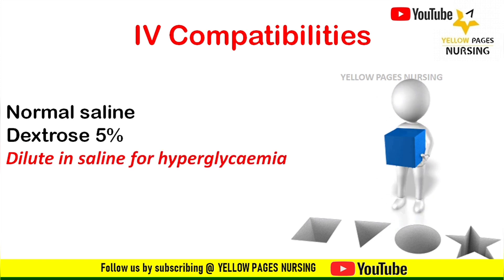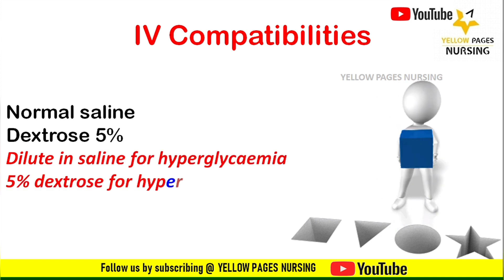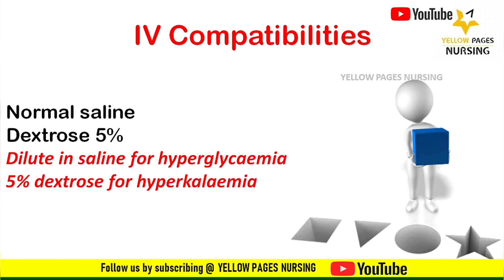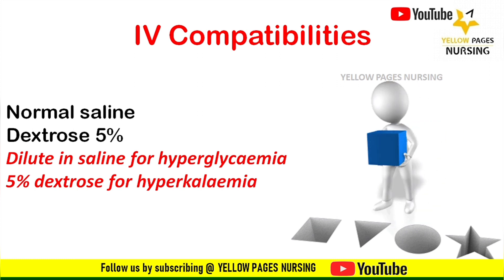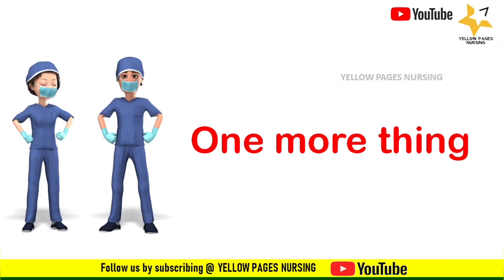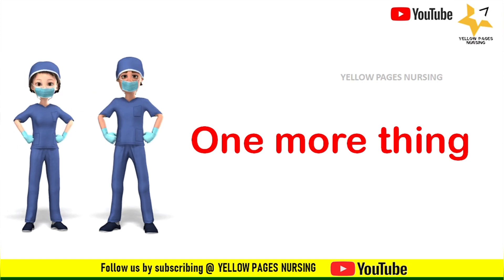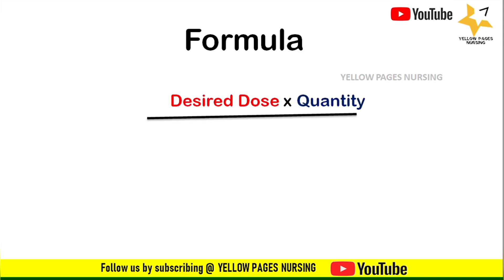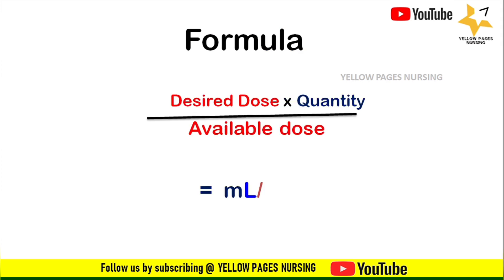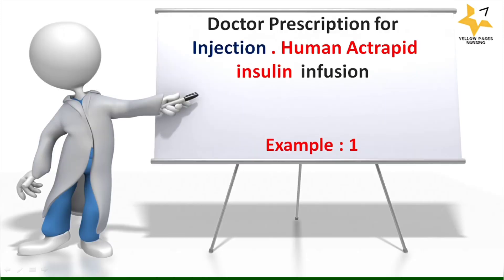Actrapid is diluted in saline for hyperglycemia and in 5% dextrose for hyperkalemia. A very important requirement before beginning the infusion is the presence of a good intravenous access line. The formula for calculation is: desired dose × quantity ÷ available dose = ml per hour.